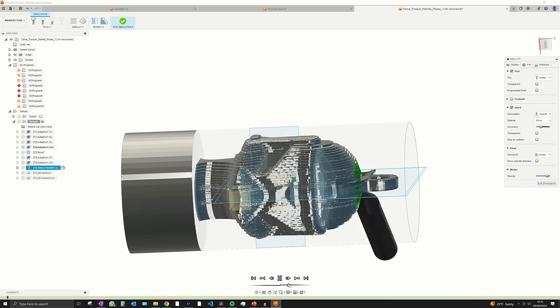Unfortunately the rotary parallel finishing toolpath used to be free and now you have to pay for it in Fusion 360 which is a massive shame. Thankfully I'm still a student so I get free educational access but it's a big shame that that feature is not free anymore.